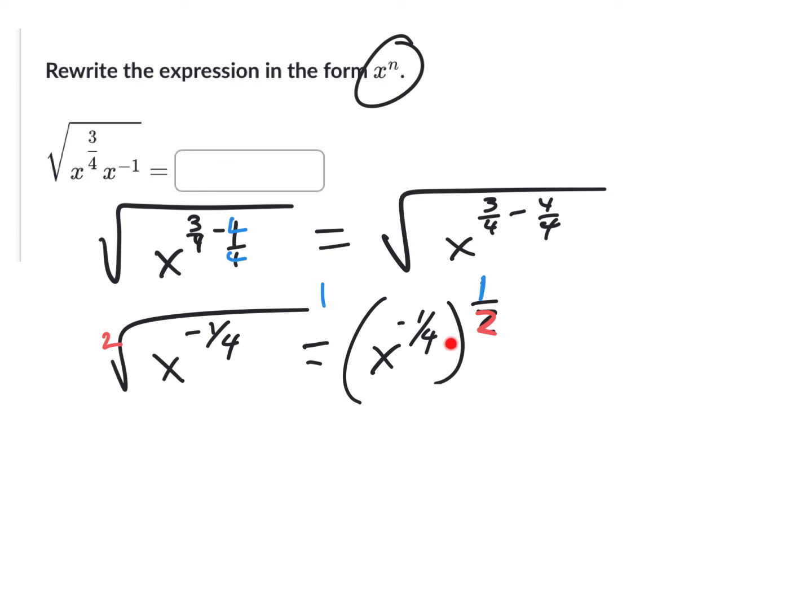Well, once again now, I just have a multiplication here. So I'm just going to multiply negative one times one. That gives me negative one. And two times four gives me eight. And so I can write this whole thing as x to the negative one-eighth. And that's actually what they're looking for, right? x to some number. The number could be a fraction. That's fine. There's nothing wrong with that.